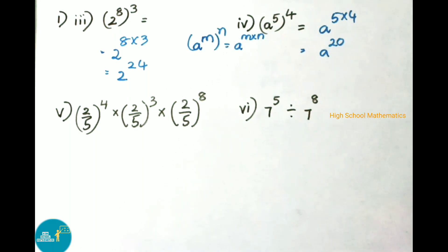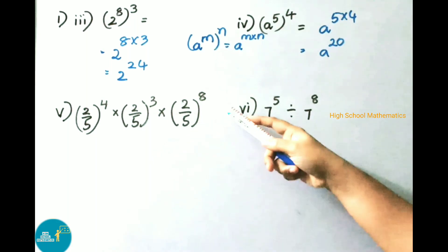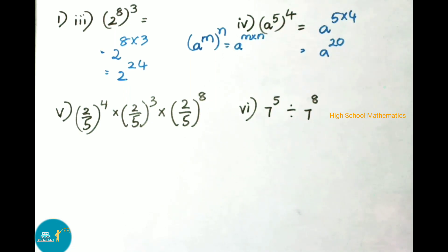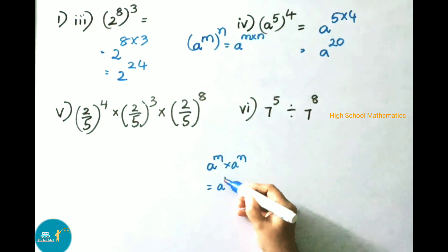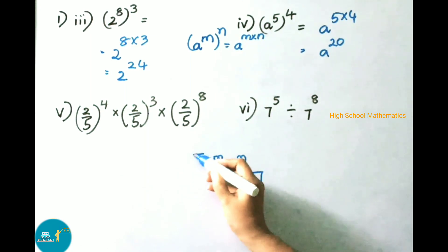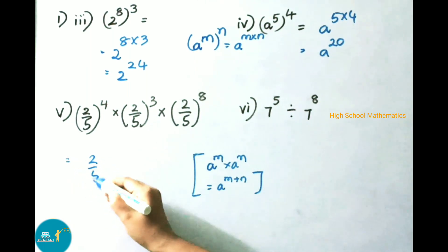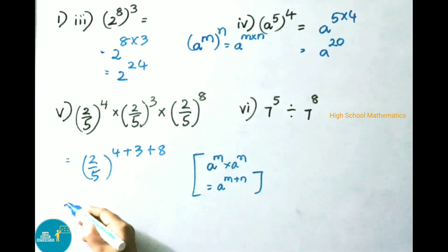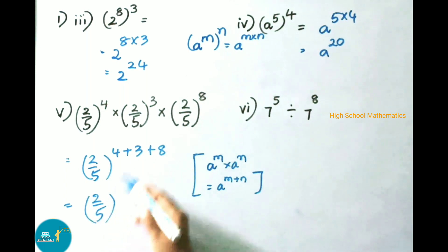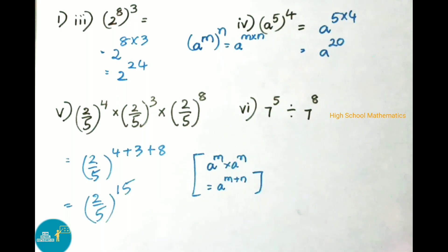Fifth one: 2 by 5 whole power 4 into 2 by 5 whole power 3 into 2 by 5 whole power 8. It is looking like the formula a power m into a power n equals to a power m plus n. So it can be written as 2 by 5 whole power 4 plus 3 plus 8, that equals to 2 by 5 whole power 15.